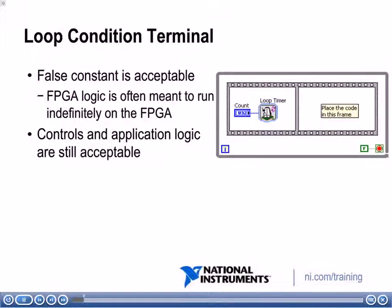On this slide, let's take a look at the loop condition terminal. If we look at the while loop here on the right, notice that the loop condition has a false constant wired to it. In the Windows world, that looks kind of weird because usually you'd want the while loop to stop at some point. However, when you're running an application on the FPGA, there are several applications where it does make sense to have that while loop run as long as the FPGA is running. So don't be surprised if you see a false constant wired there — that just means the while loop is going to keep running.